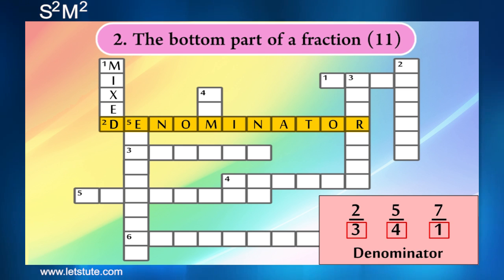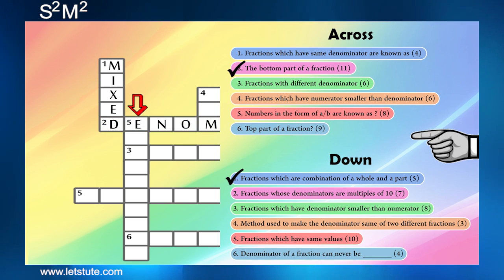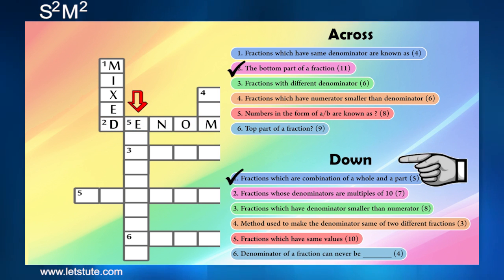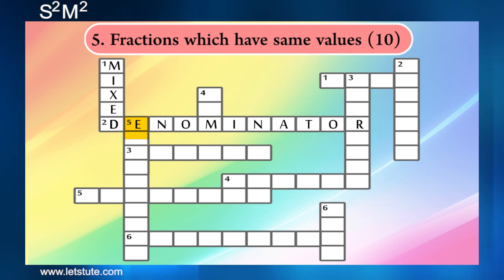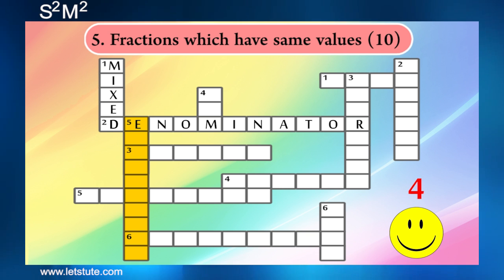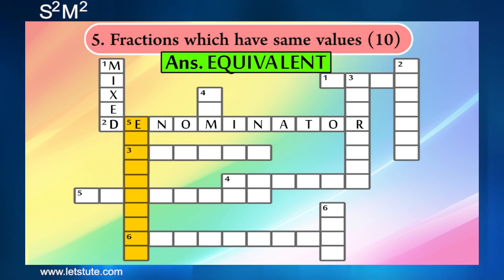Now since we have written denominator, we can see we have the first letter of the fifth question in down. So let's see what the question is. The fractions which have the same values — so what do we call them? We call them equivalent fractions.